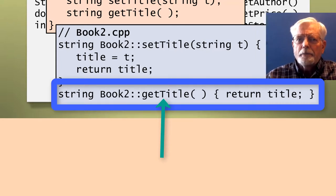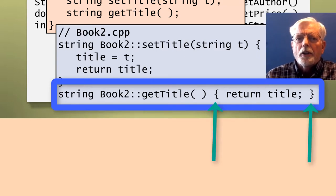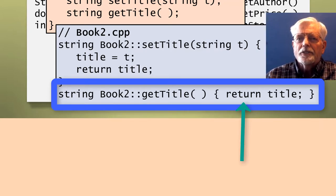GetTitle is the name of the function method. I know it is a function because it has the parentheses after the function's name. The open and close curly braces identify the block of code that belongs to the function method. And, return title semicolon is the only line of code in the body of the function. Return title semicolon gets the contents of the private member data named title and sends it back to the main program.